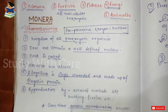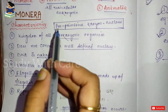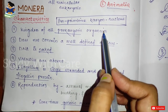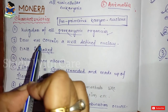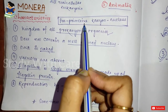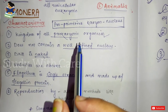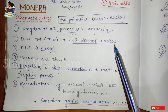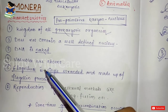Now we will discuss Monera in detail. In Monera, as I said earlier, he included all prokaryotic organisms — so this kingdom is also known as the kingdom of all prokaryotic organisms. Monerans do not contain a well-defined nucleus. 'Pro' means primitive and 'karyon' means primitive nucleus, so they do not have a well-defined nucleus. As a result, the DNA is naked, and vacuoles are absent in Monera.